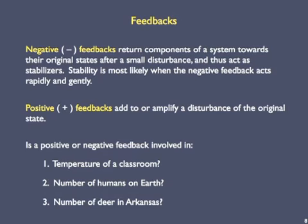What about the number of humans on Earth? Humans make babies — more humans means more babies, and their babies grow up to make progressively more babies. So long as the birth rate exceeds the death rate, which has been the case for almost all of human history, humanity provides us with an example of a positive feedback. What about the number of deer in Arkansas? More deer breed more deer, but more deer are a nuisance for homeowners and provide meat for hunters, so humans kill off a bunch of the increasing deer, cutting back on their numbers — this is a negative feedback because it counters the original increase.